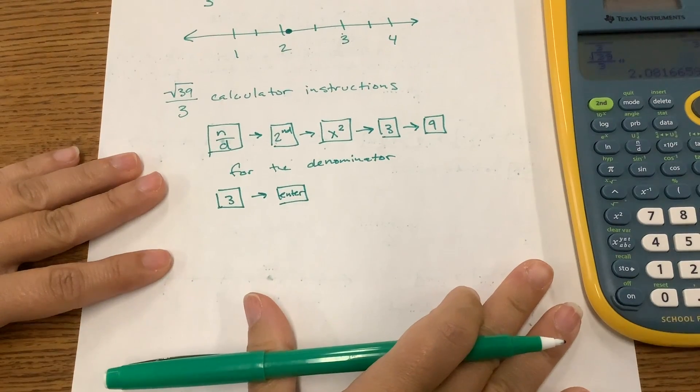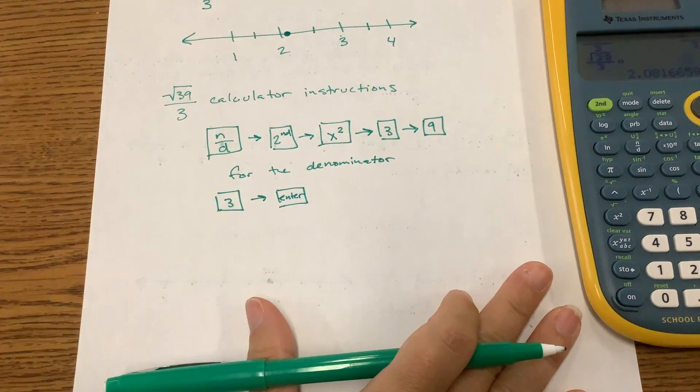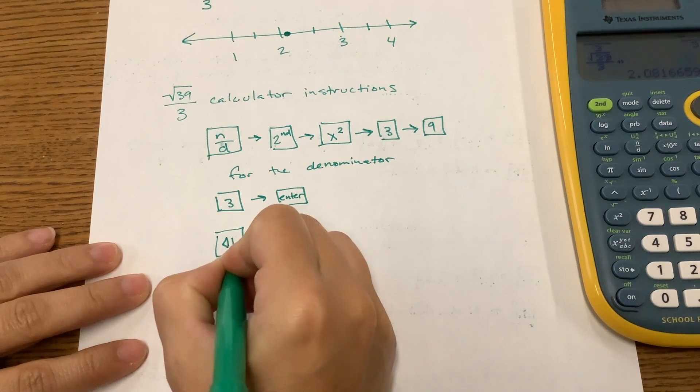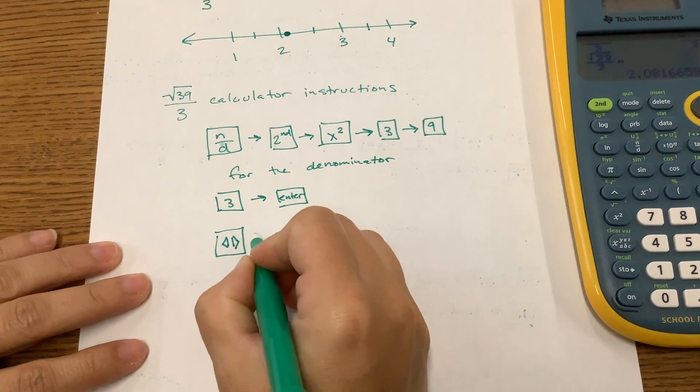We found that it was irrational because it gave us the same value back. So we used our double arrow key to look at that decimal.